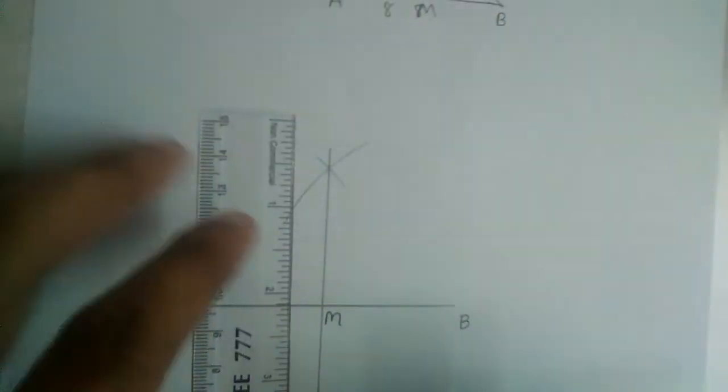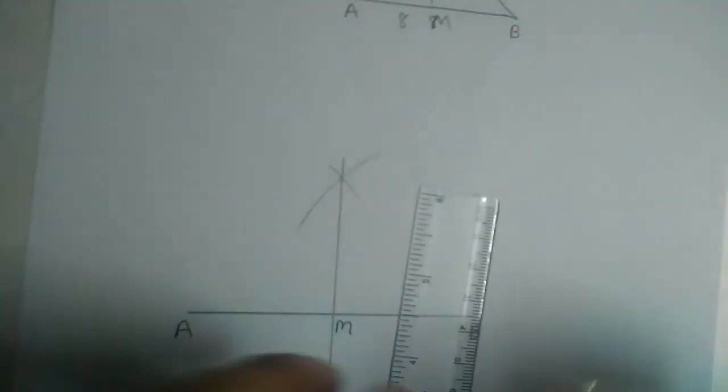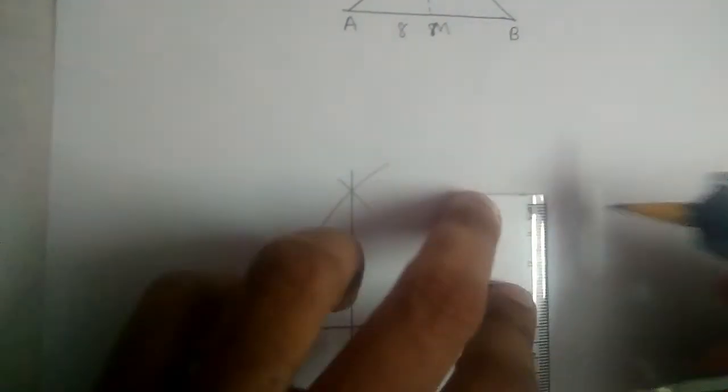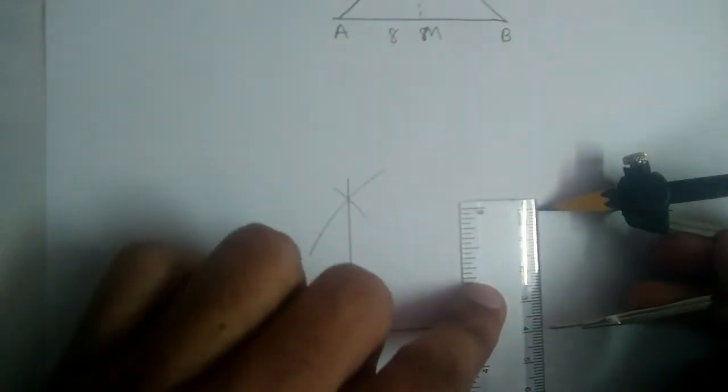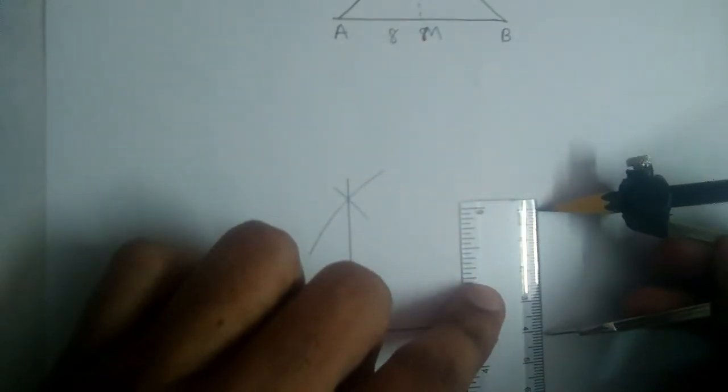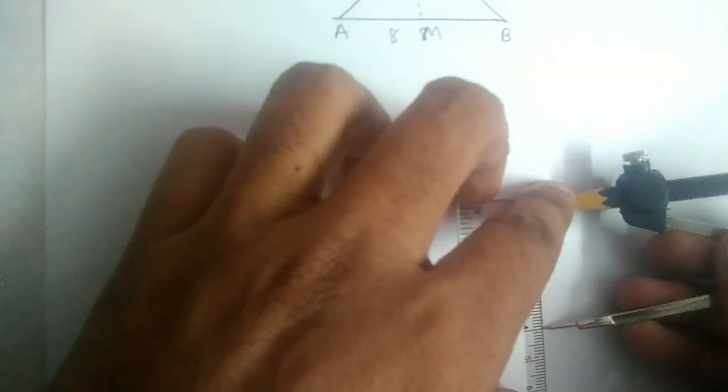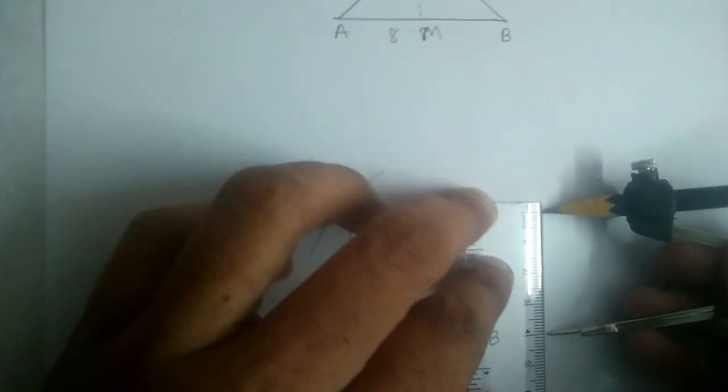So what we will do is we will measure 4 cm and draw an arc from M. 4 cm here. Let us measure 4 cm. Slightly greater than 4. This is 4 cm.